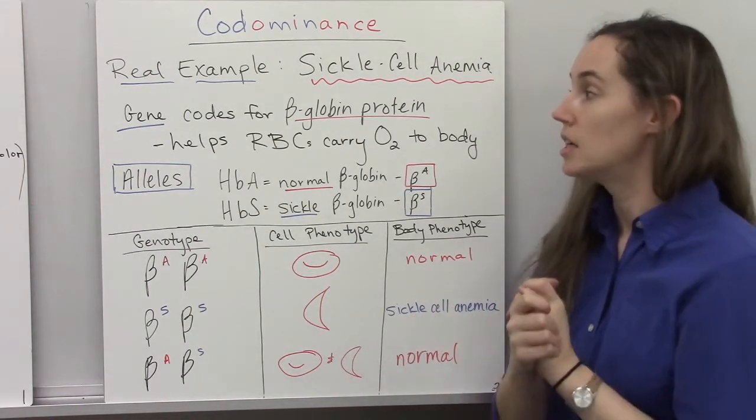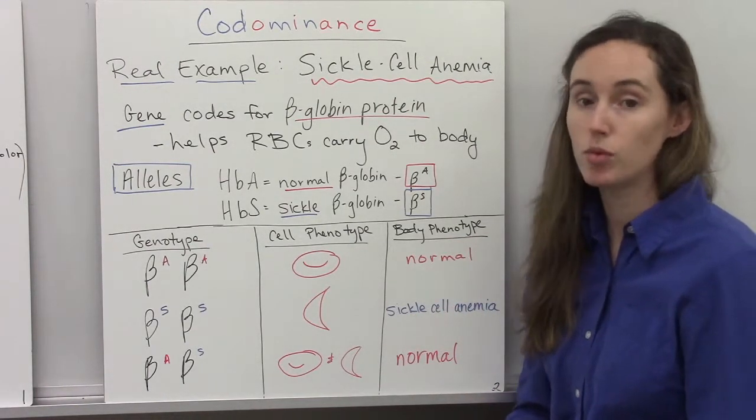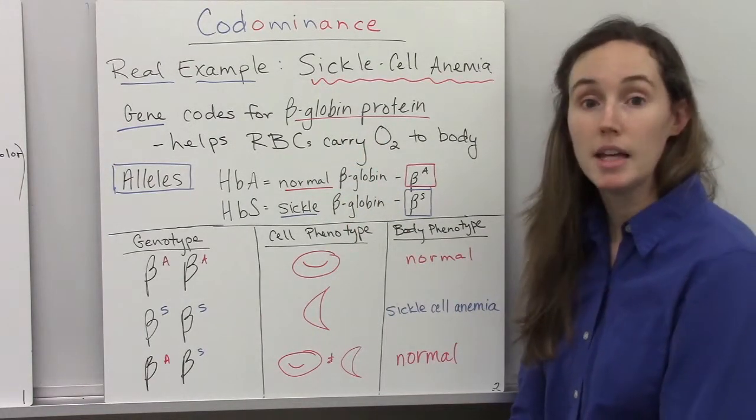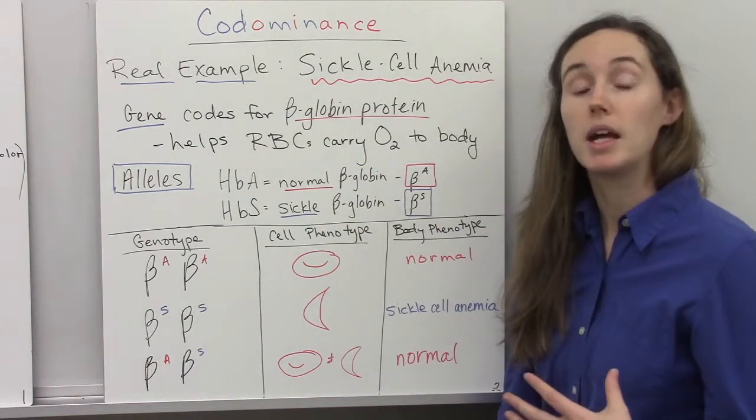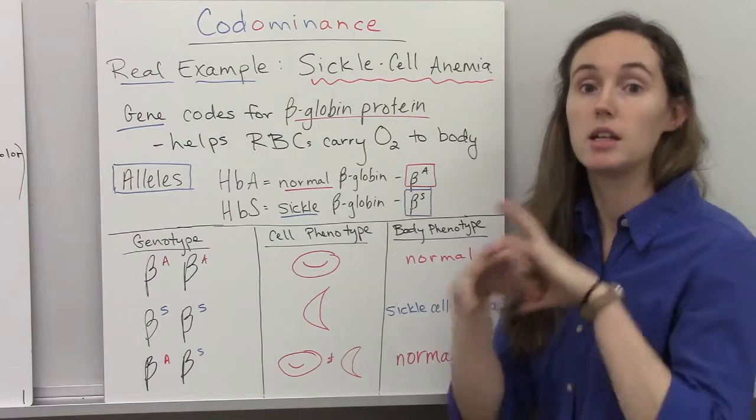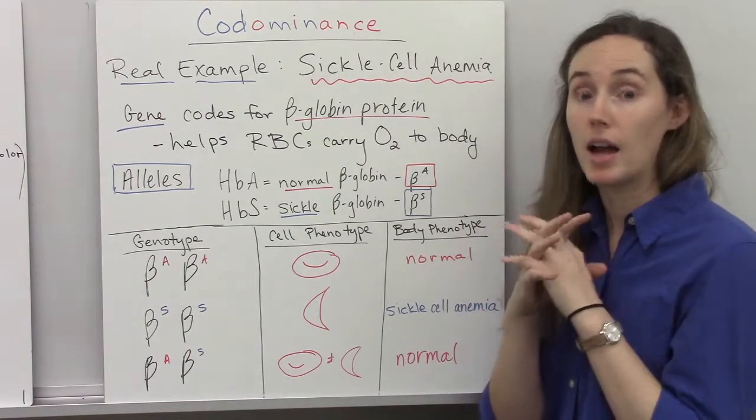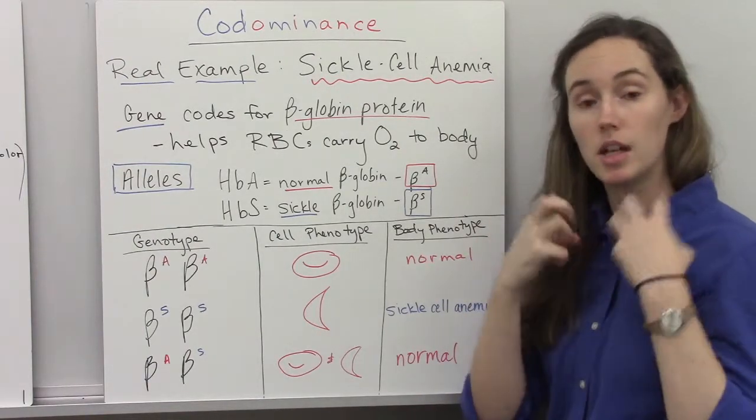So there is a gene that codes for a protein beta-globin. And beta-globin is one of the parts that make the quaternary protein hemoglobin that actually helps carry oxygen in your red blood cells.